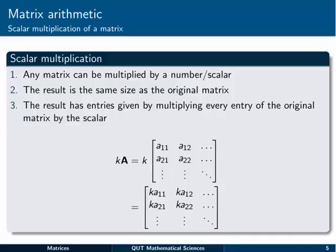Let's have a look at scalar multiplication. That's just multiplying a matrix by a number out front. It's very similar. Any matrix can be multiplied by a number or a scalar. Size doesn't matter. The result, just like with addition, is the same size as the original matrix.